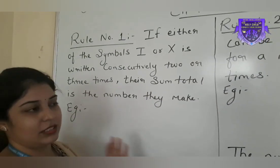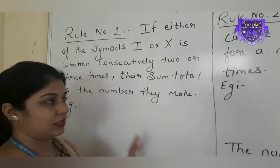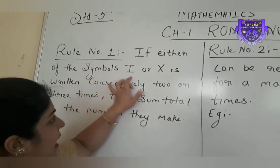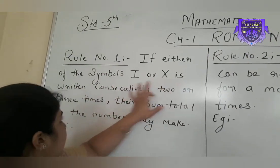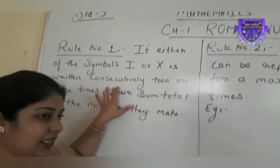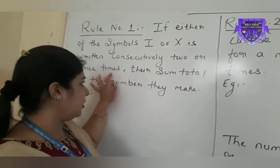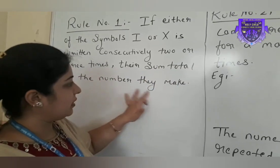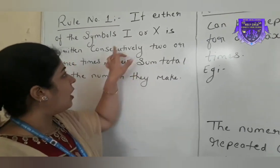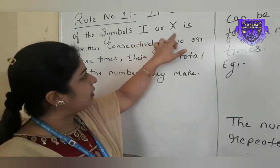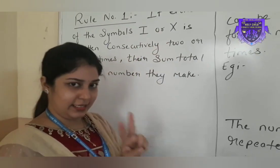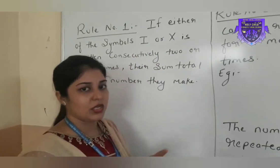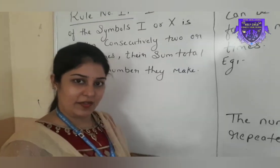In this chapter we have to learn some rules. Rule number 1 is: if either of the symbols I or X is written consecutively, means continuously two or three times, their sum total is the number they make. Means, either of these symbols written continuously two times — we have to add up their values.